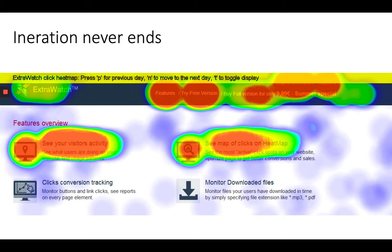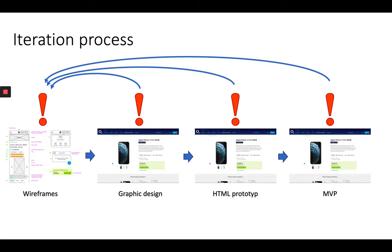You don't stop getting feedback after you launch your product. When you launch software, it's much easier to get more quantitative types of data and validation. For example, heat maps — like this example — show you where customers are clicking, so you might understand that they click on a picture expecting to go somewhere but it's just a static image, and you need to change it. Iteration is very important.